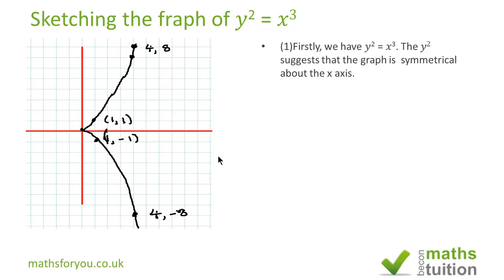This is it. It says y squared is equal to x cubed. Now the y squared suggests to me that the graph is symmetrical above the x axis. That is the first thing.